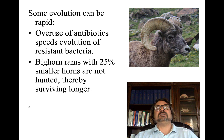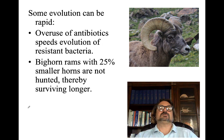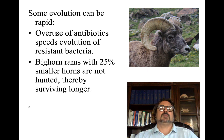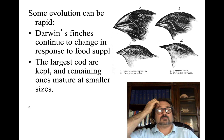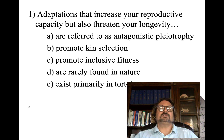Some evolution can be rapid, such as the overuse of antibiotics speeding evolution of resistant bacteria. Bighorn rams have developed 25% smaller horns, protecting them from being hunted — if horns aren't long enough, they're less likely to be targeted. Darwin's finches continue to change in response to food supply. And the largest cod are kept by fishermen, leaving remaining ones to mature at smaller sizes.